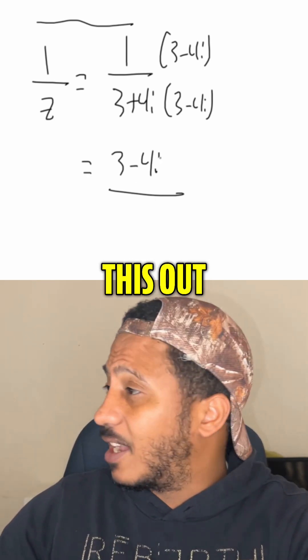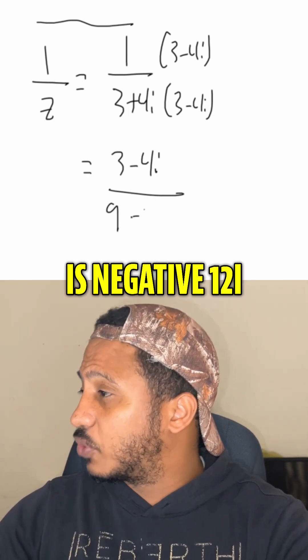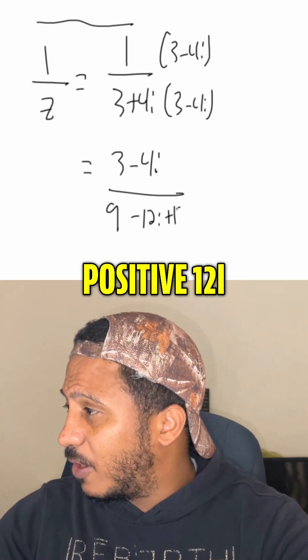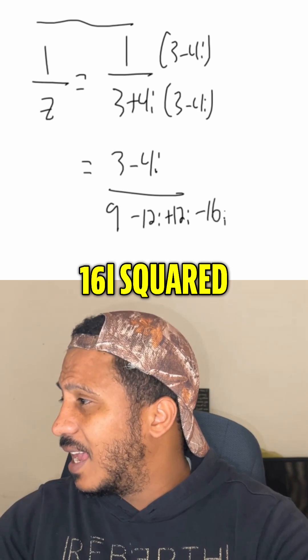foiling or multiplying this out, we get 3 times 3 is 9, 3 times negative 4 is negative 12i, 4i times 3 is positive 12i, and then 4i times negative 4 is negative 16i squared.